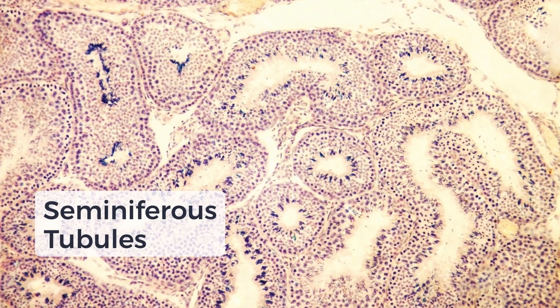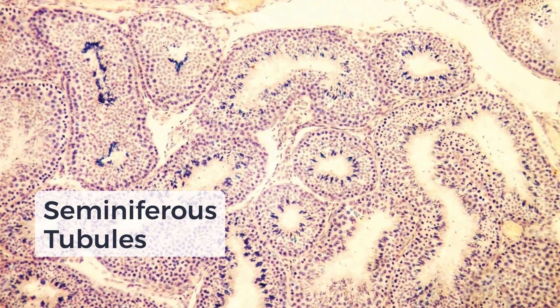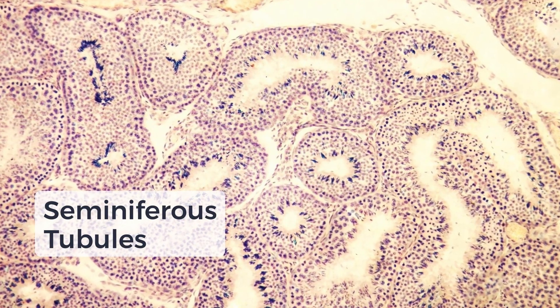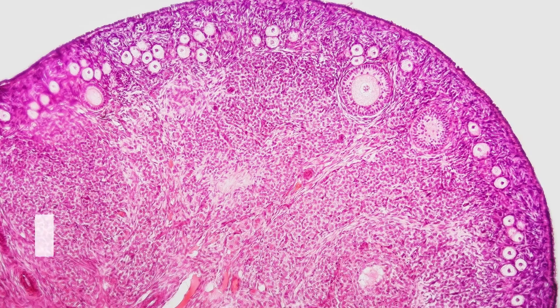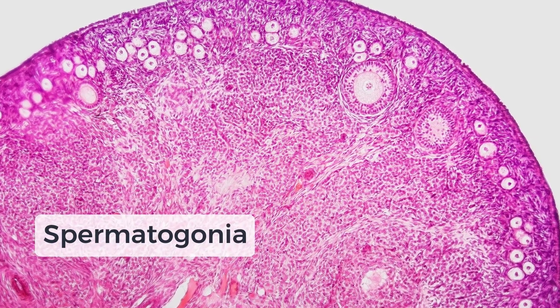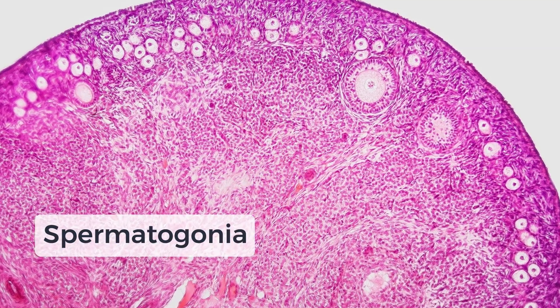It all starts inside these tiny coils in the testicles called seminiferous tubules. This is where the sperm development begins. Along the edges, we have spermatogonia, somewhat similar to baby sperm cells.